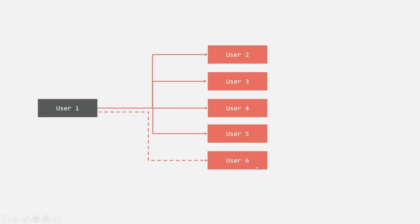In this application, we are not going to implement group chat functionality, so the chat will always be between two users. In the chat schema, we created a members property, and that members property is going to store an array. In that array, we are going to store the user ID of the two users between whom we want to start the chat. So in the members array, we store the user ID of user1 and user6, and just by doing that, a chat will be created between them. Using this concept, we are going to implement the create chat functionality.